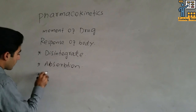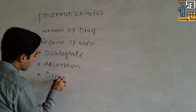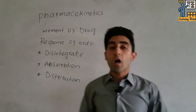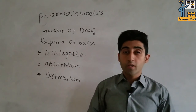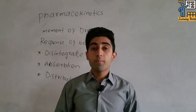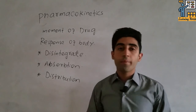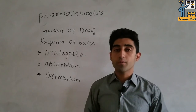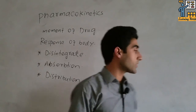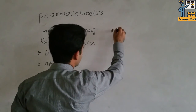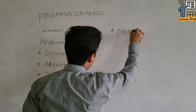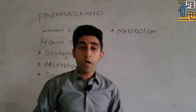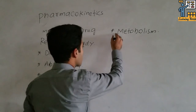In the next stage, distribution will occur. In the distribution stage, the drugs are distributed in the body from the bloodstream. After distribution, the next process is biotransformation, which occurs in the liver.